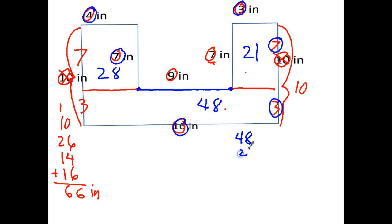And I add my areas, 48, 21, and 28. 8 and 8, 16, plus one more, 17, 97 square inches. And that's how I find the area and perimeter of multi-shapes.